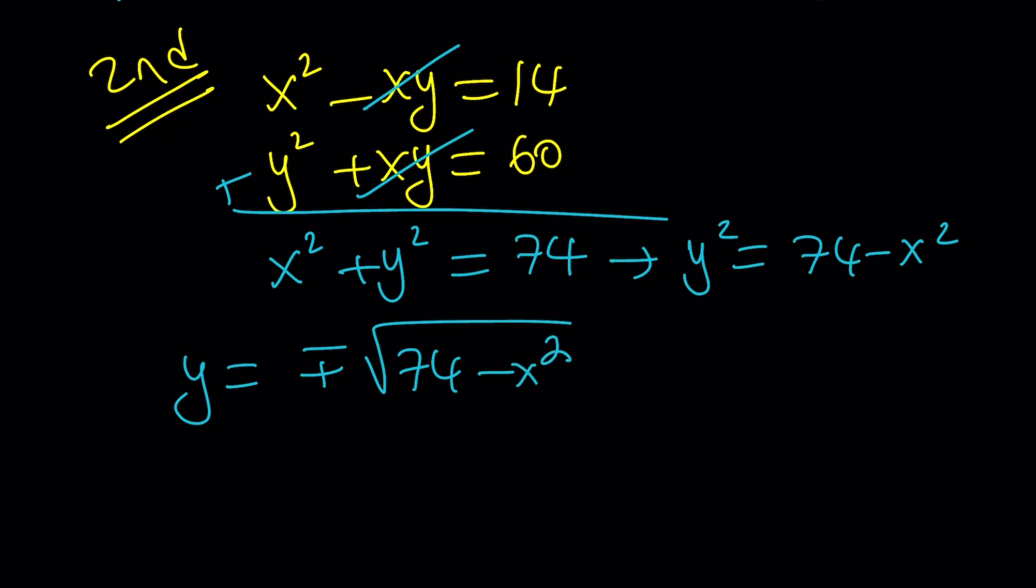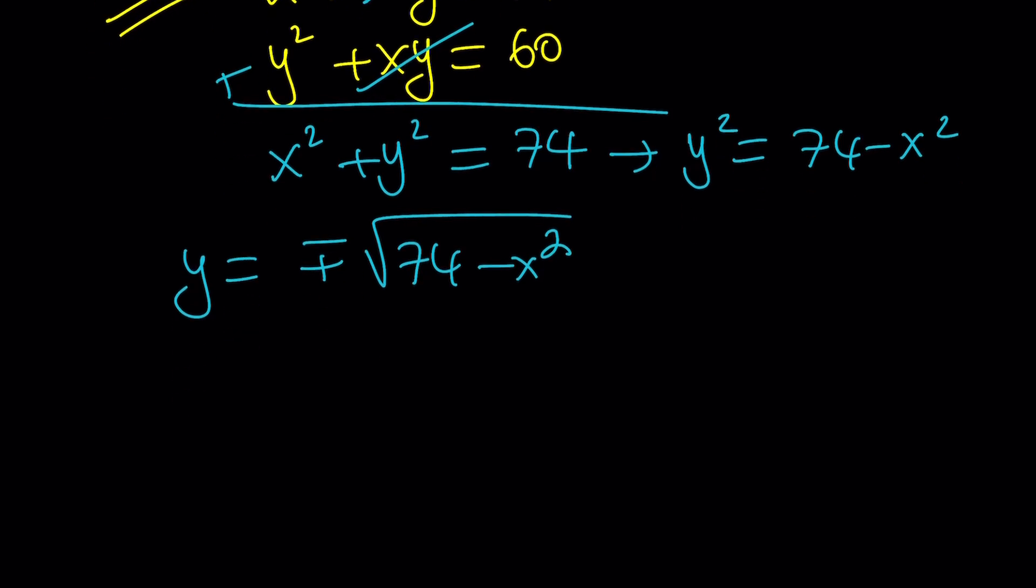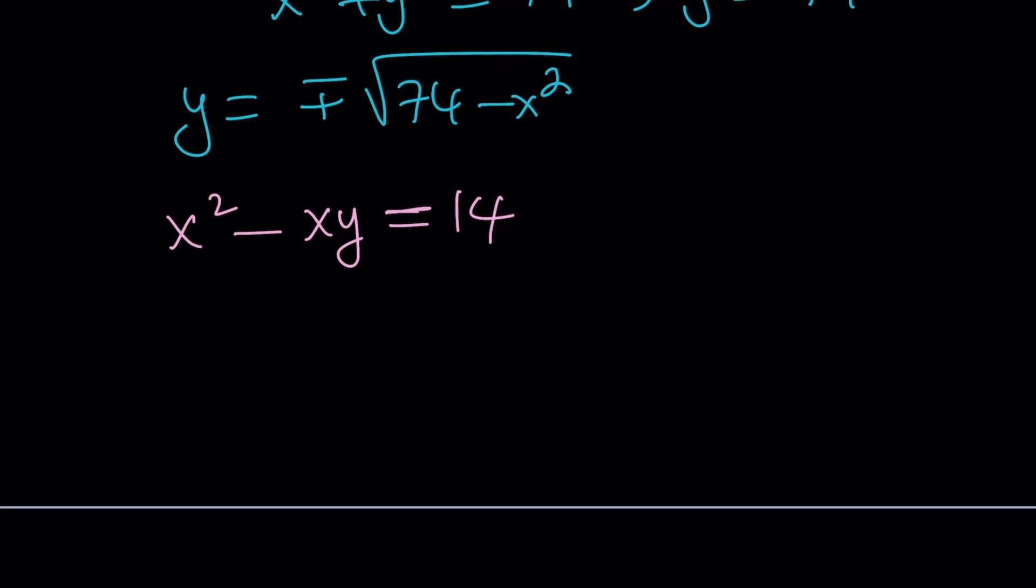But when you take the square roots, you've got to be careful because there's going to be two solutions with a plus minus sign. And this is what I can write y as. So now let's go ahead and plug this into one of the equations. The first one looks easier, numbers are smaller. And now we're going to replace y with one of these. Let's use the positive one, but the negative one is going to be very similar. So if I go ahead and replace y with square root of 74 minus x squared, I have a radical equation now. Let's go ahead and put the non-radicals on one side and the stuff with the radical on the other side. And guess what we're going to do? Square both sides.